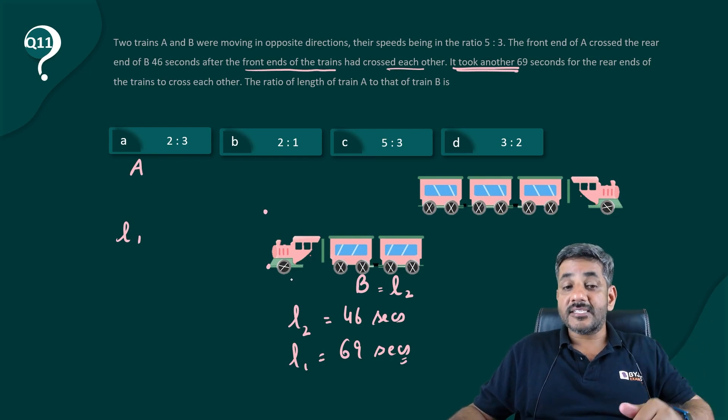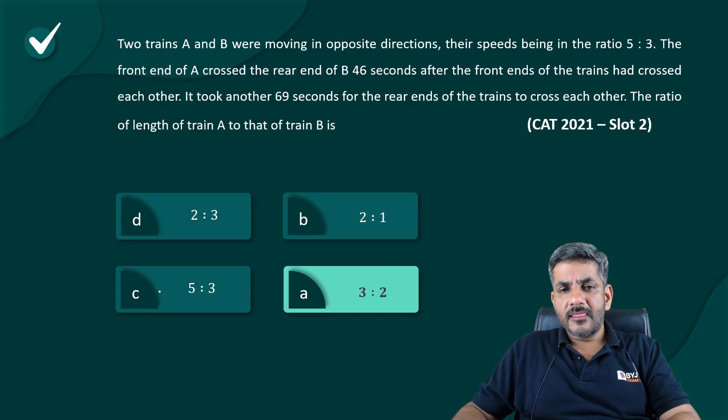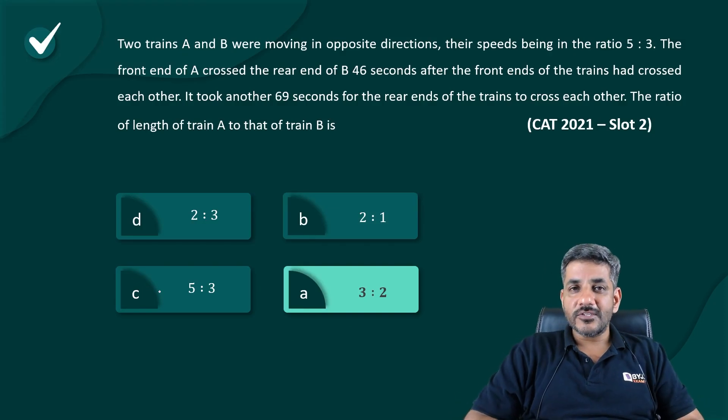Ratio of time is 69 is to 46. That is L1 is to L2. So therefore, ratio of length would also be 69 is to 46. When I cancel out by 23, it gives me 3 is to 2 as the answer. So that's it. Option D is the correct answer for this question.